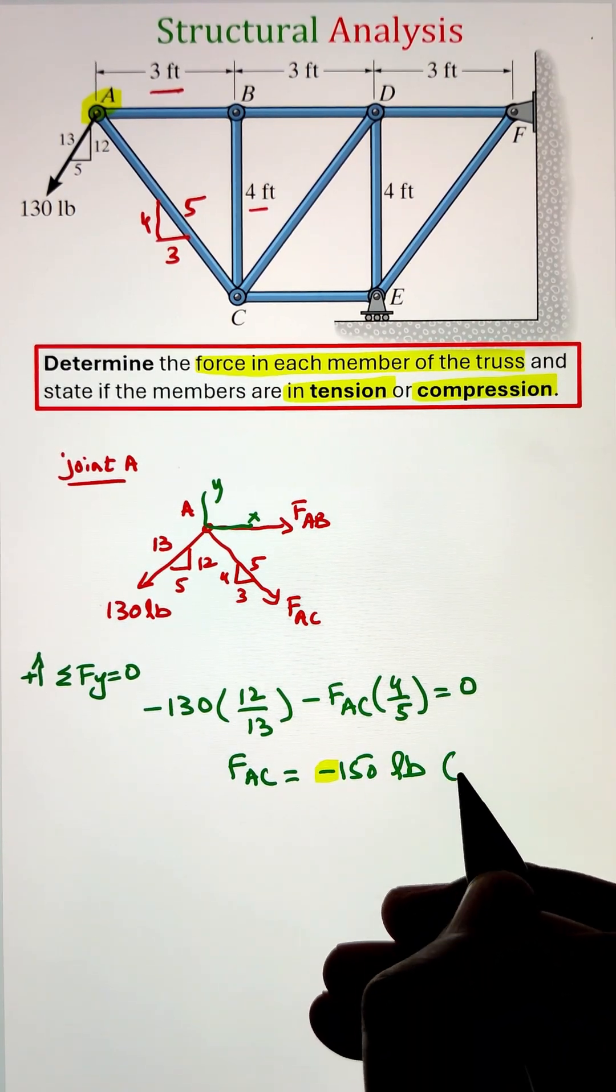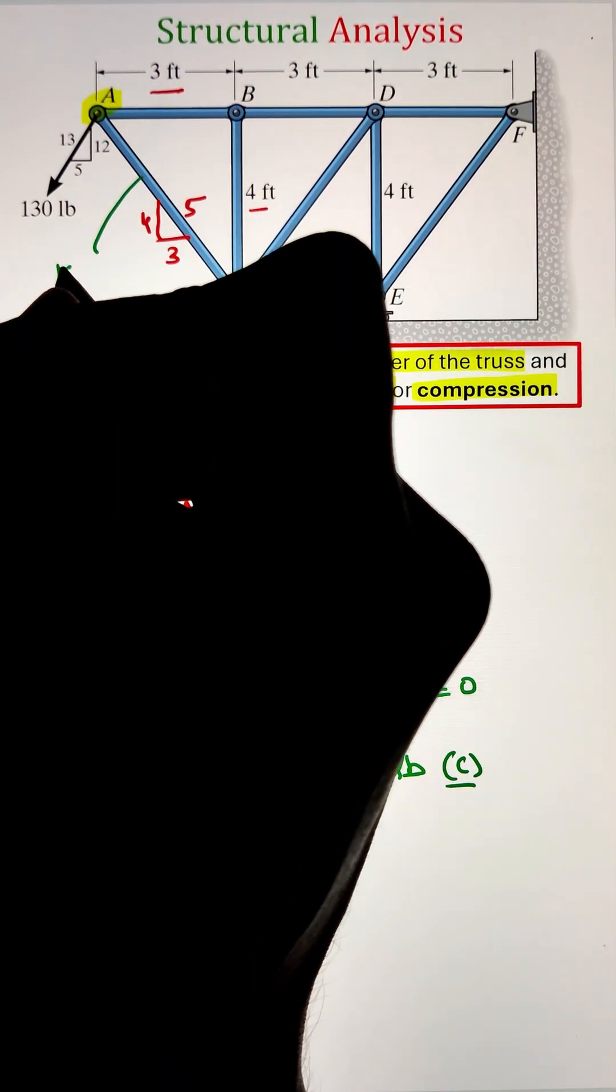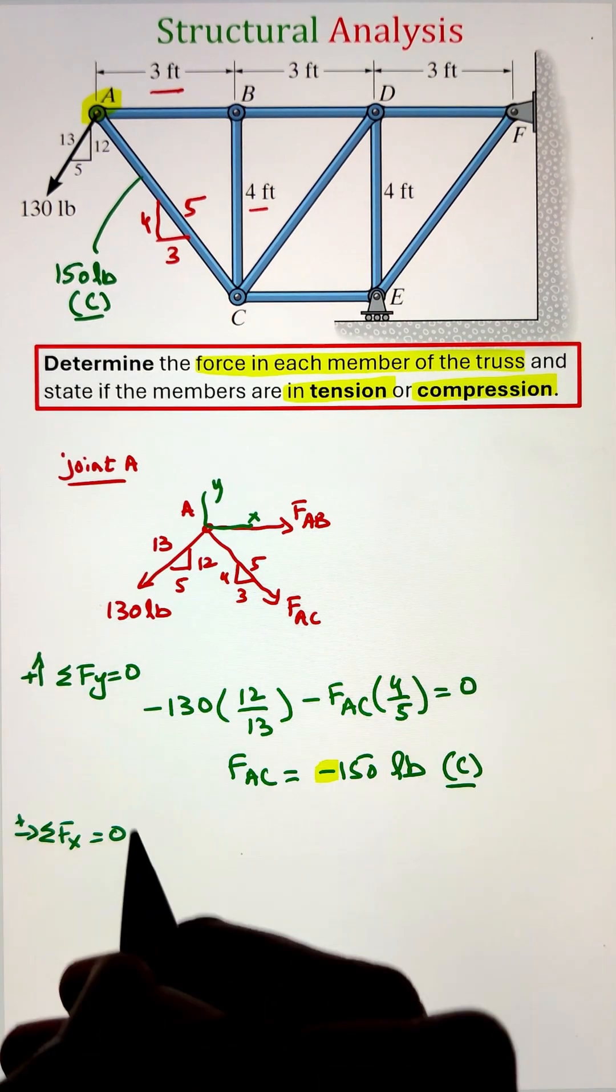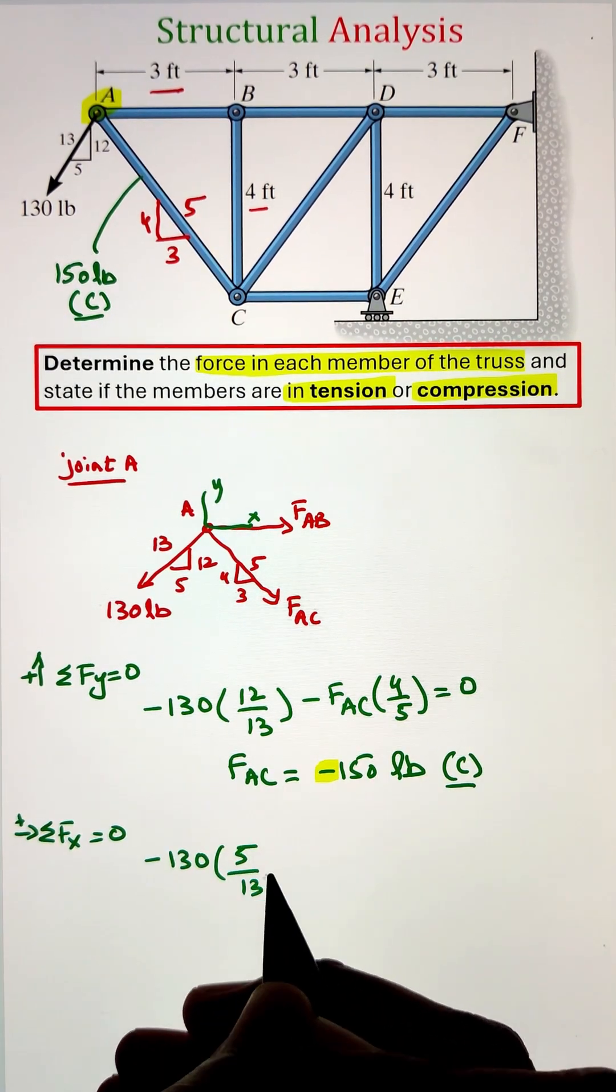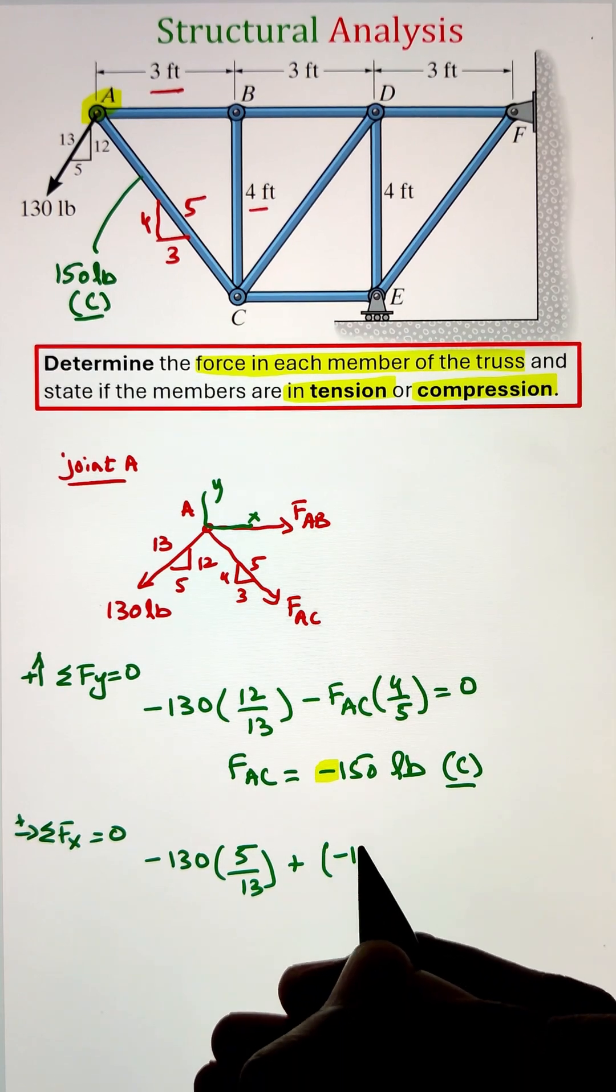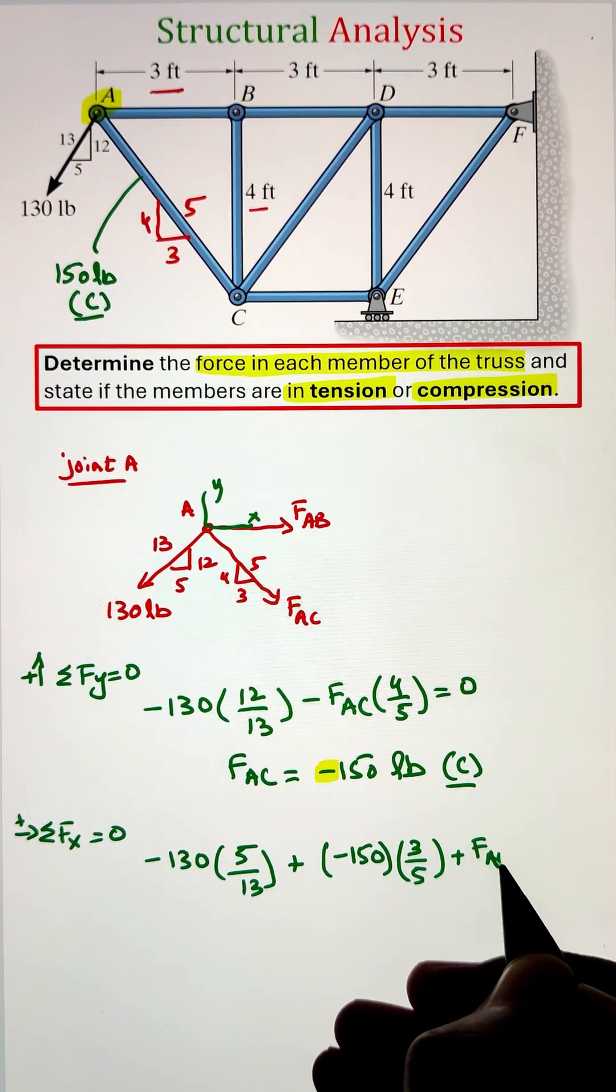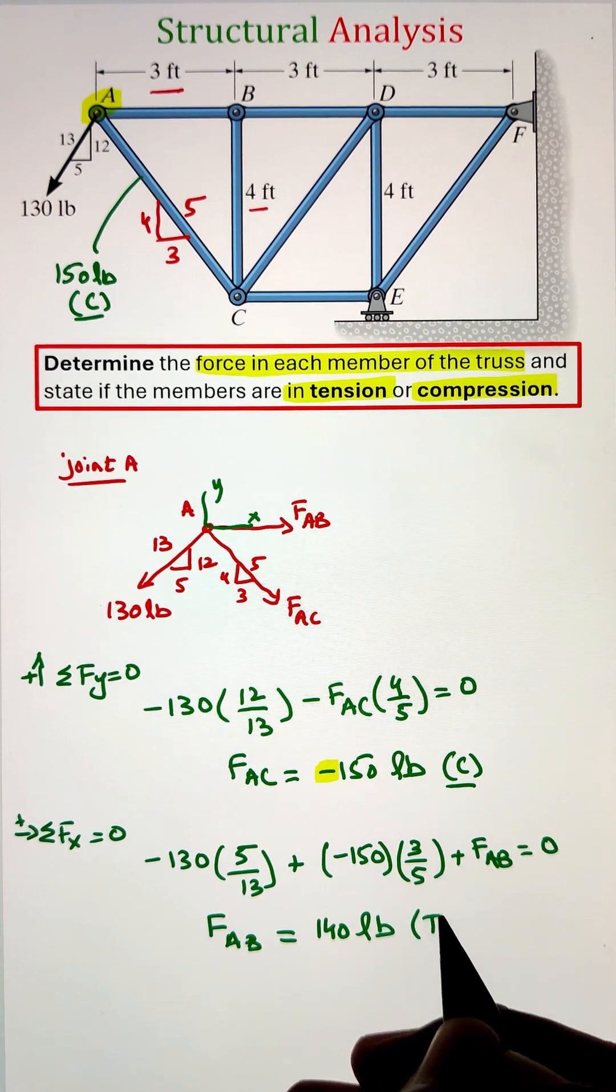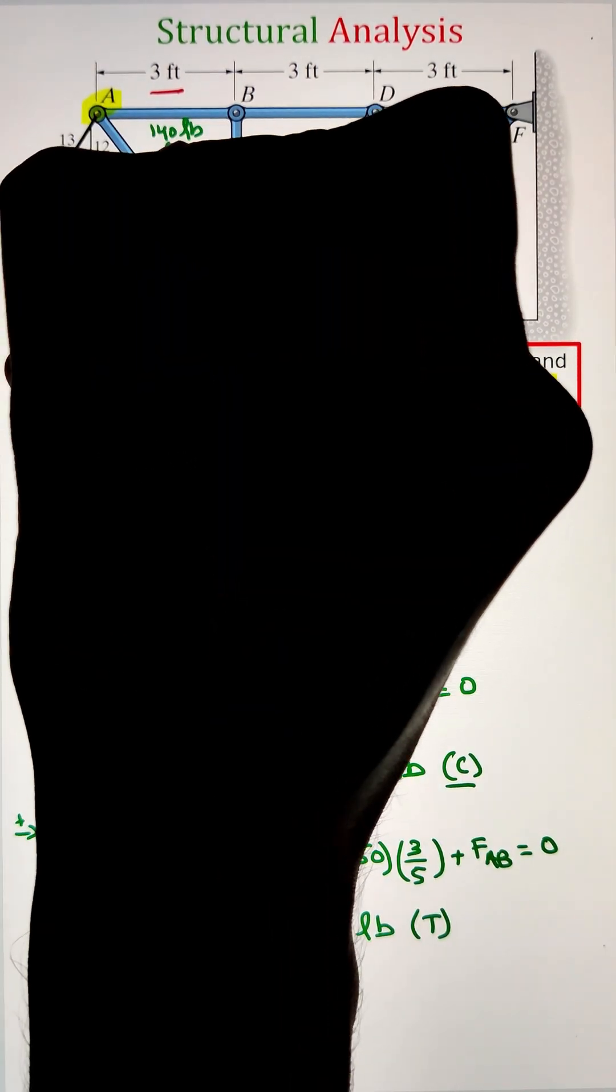For our summation of forces along the vertical axis, we are getting an FAC value of negative 150 pounds, which means that the member is in compression. Whereas, doing summation of forces along the x direction, we get FAB equals 140 pounds, meaning the member is in tension.